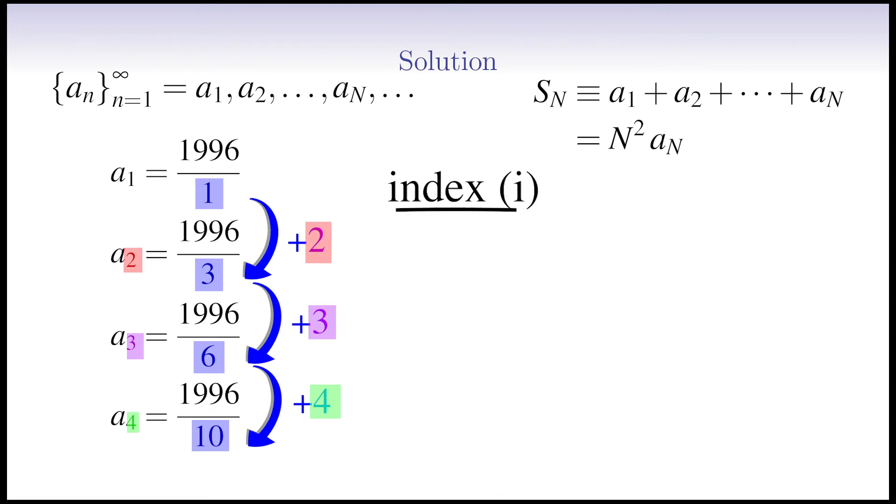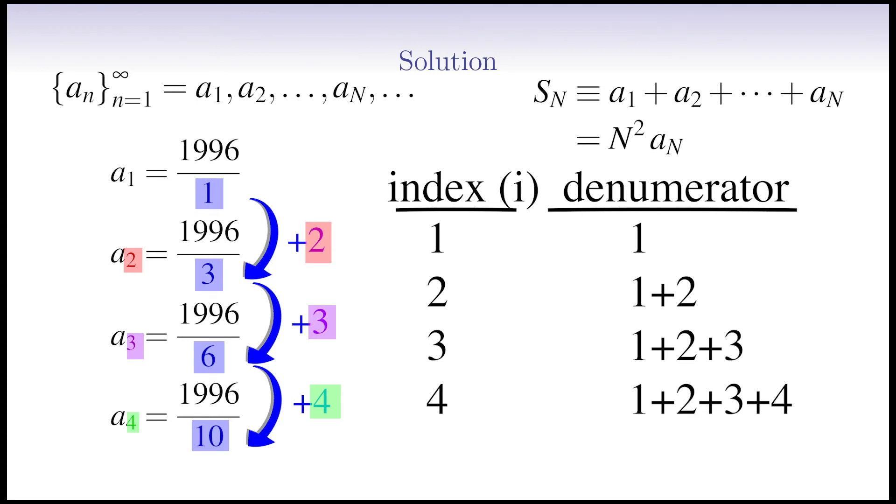Let's call the counter-index by I. If the index is 1, the denominator is 1 as well. Since the denominator of the new term is equal to the sum of the index of the new term plus the denominator of the previous term, we can say that if the index is 2, the denominator is 1 plus 2. If the index is 3, the denominator is 3 plus 3, which is 1 plus 2 plus 3. If the index is 4, the denominator is 6 plus 4, which is 1 plus 2 plus 3 plus 4. So, we conclude that the denominator of the term number n is the sum of the natural numbers up to n.